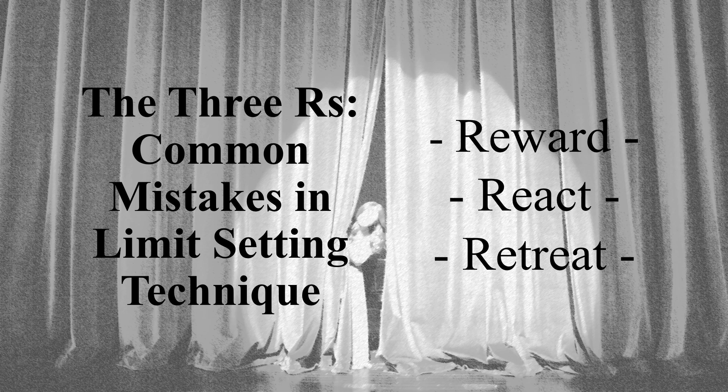The final R is Retreat. You set the limit, you say it again, and right at the time when you should be saying the if-then statement, you quietly go to your room and just let the child do whatever they want — an out-of-sight, out-of-mind attitude.